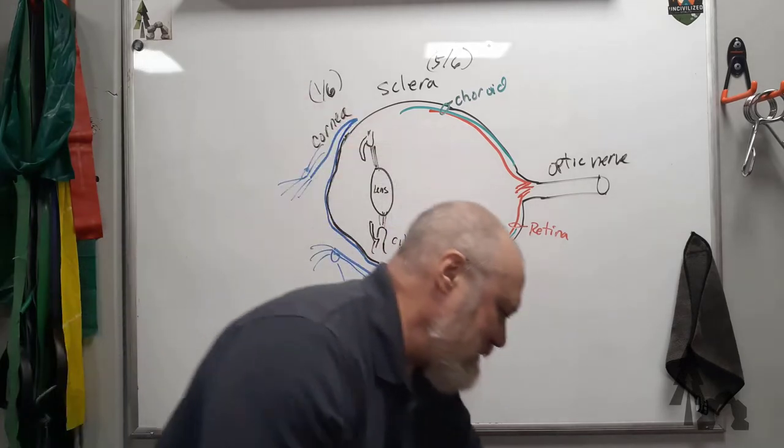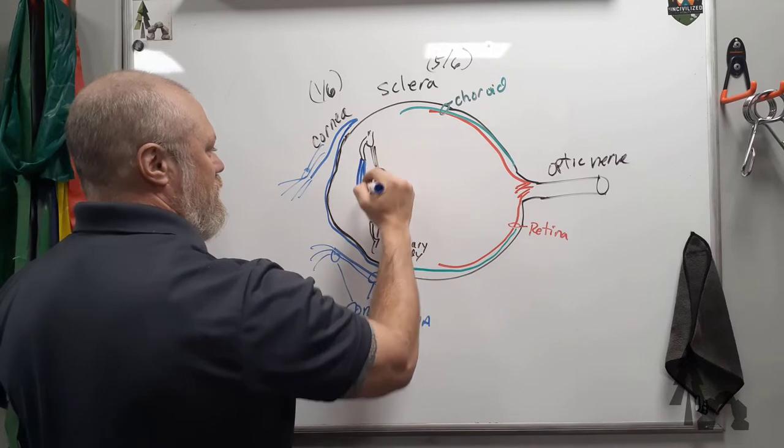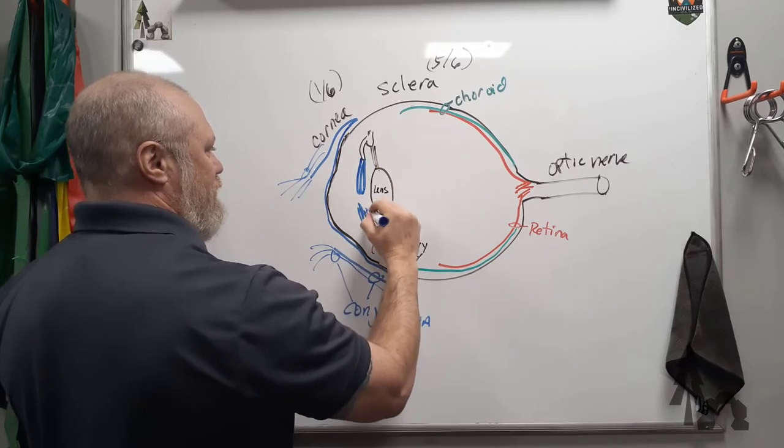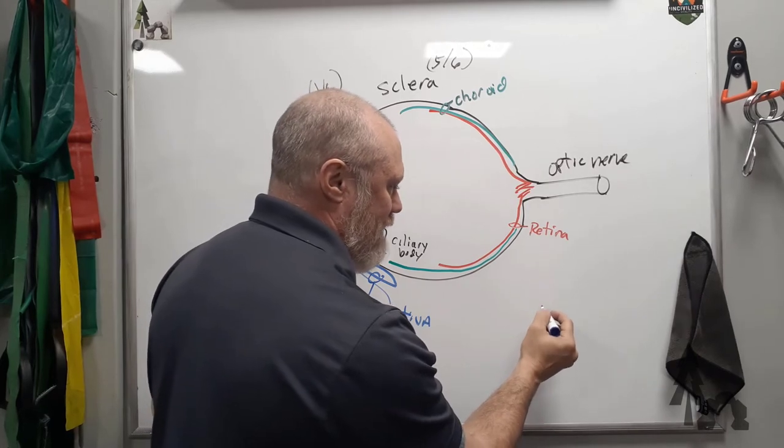The ciliary muscles are going to run out in a couple different ways. If you look at an eye from the front, you've got radial muscles in the pupil, or around the pupil.